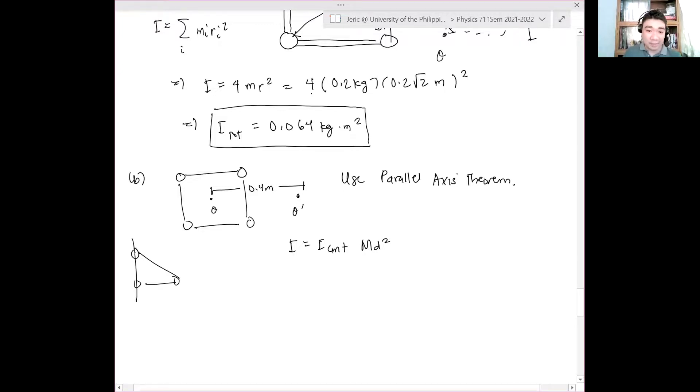Kasi dito, nasa axis of rotation siya. Hindi magagawa yan. They're different. So I_CM is given. This is your I_total. Plus, the total mass which is 4 times the small mass m times the distance which is d squared.